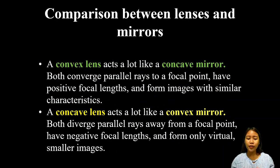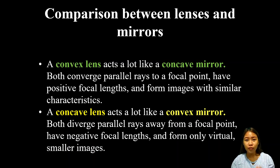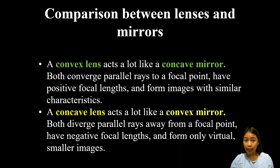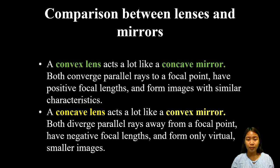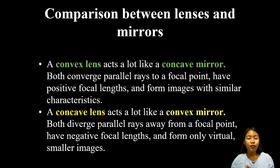Take note that the convex lens and concave mirror are similar to each other. They are similar in that they both converge light rays — they bring light rays together. Aside from that, they both have a positive focal length. The convex lens and concave mirror form similar characteristics of images.